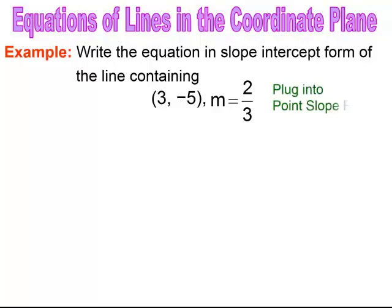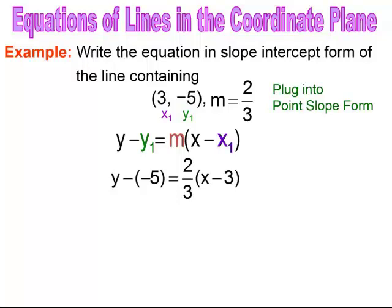We're asked to write the equation of the line in slope-intercept form containing the point (3, negative 5) and slope 2 thirds. I check: do I have the y-intercept? No, because x is not 0. Is the slope 0 or undefined? No. So I use the point-slope form. My x1 is 3, my y1 is negative 5, and my slope m is 2 thirds.